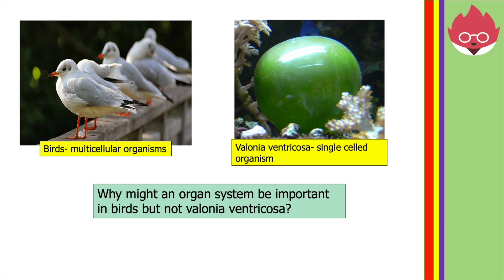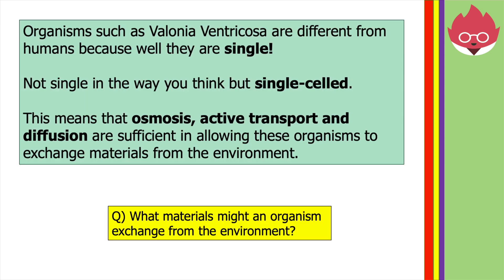Take a look at these two pictures. Why might an organ system be important in birds, but not Valonia ventricosa? Organisms such as Valonia ventricosa are different from birds because they're single-celled. This means that osmosis, active transport and diffusion are sufficient in allowing these organisms to exchange materials from the environment.